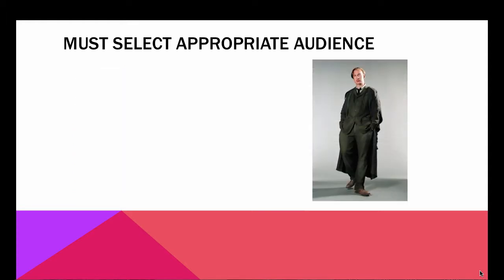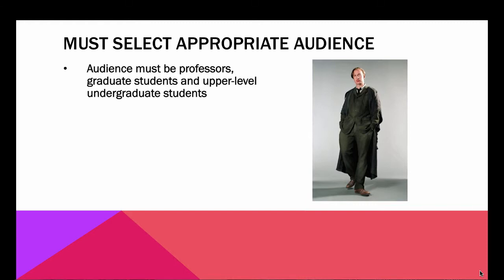You do have to select an appropriate audience for your paper. The audience has to be, just as it was for paper one, professors, graduate students, and upper-level undergraduate students. In other words, it is going to be an academic audience that has background and is informed in the discipline you're addressing, but not necessarily on your specific topic.